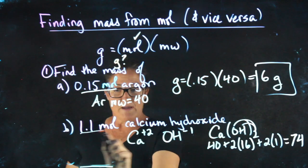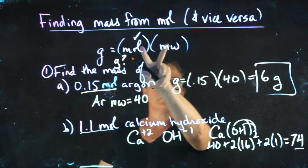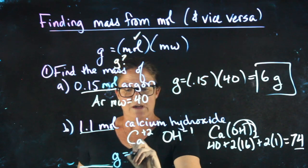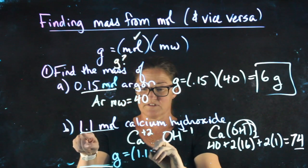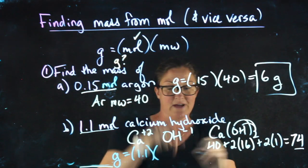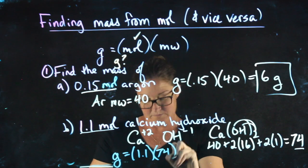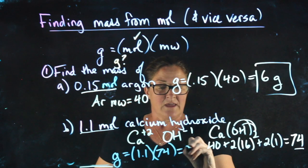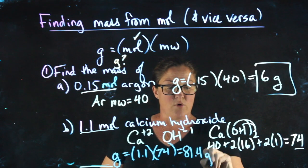Now that I have my moles and my molecular weight, I can plug each of these in and solve for the grams. So grams will equal 1.1 moles times the molecular weight of 74, giving me 81.4 grams.